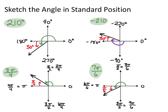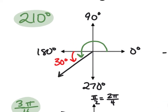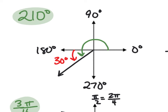To do trig for any angle, we need to sketch angles in standard position. For 210 degrees, we need to figure out how to graph it. Zero and 360 degrees are on the right, 90 degrees is up, 180 is left, and 270 is down. Since I'm looking for 210, that's 30 degrees beyond 180, so it's in quadrant 3 — the green angle at 210 degrees.